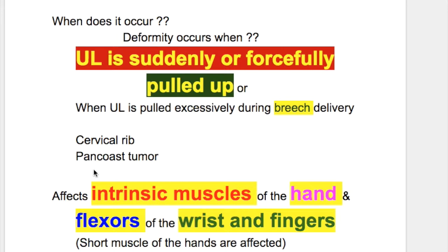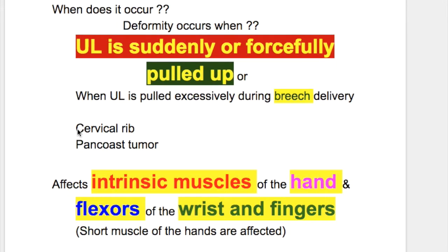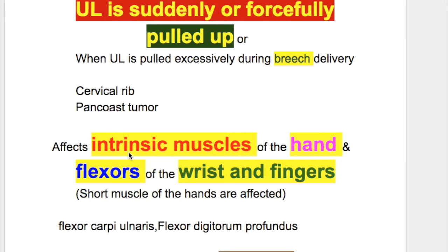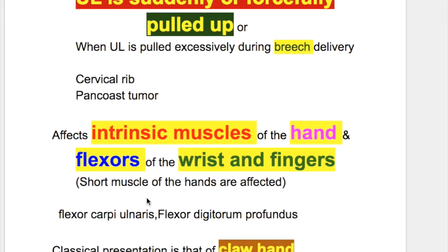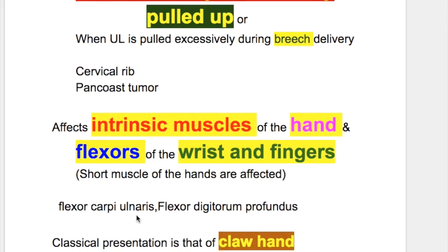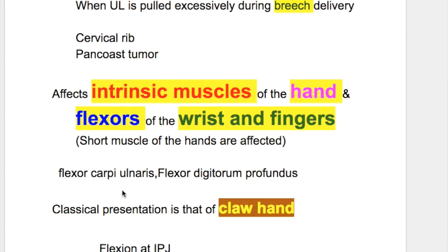It may also occur in the case of a cervical rib and in Pancoast tumor. It affects the intrinsic muscles of the hand and flexors of the wrist and fingers. The short muscles of the hand are affected. Flexor carpi ulnaris and flexor digitorum profundus are paralyzed.